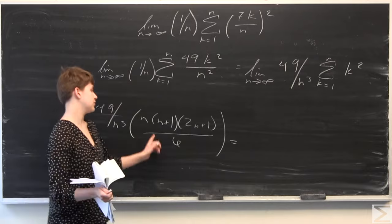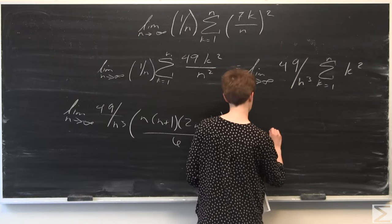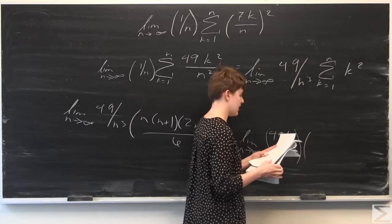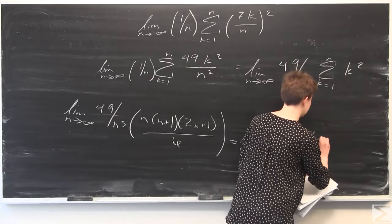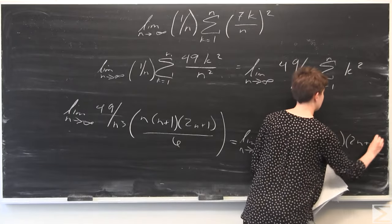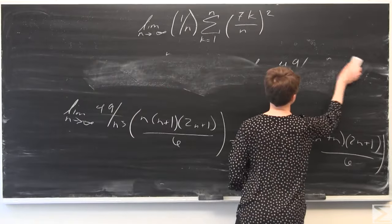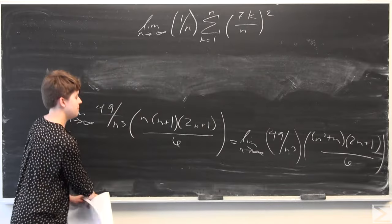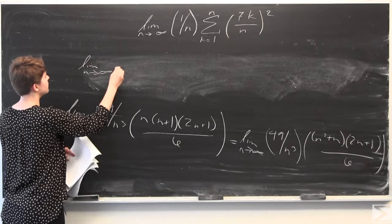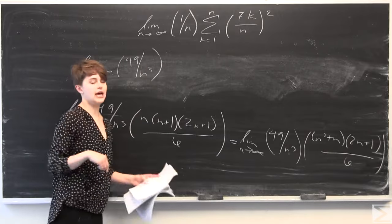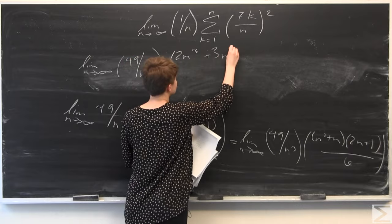So we can go ahead and multiply out these terms here, combining all the like terms in the numerator. We get the limit as n goes to infinity of 49 over n cubed. We multiply n by n plus 1 to get n squared plus n, then times 2n plus 1, all over 6. So when we multiply out the numerator, we end up getting 2n cubed plus 3n squared plus n, all over 6.